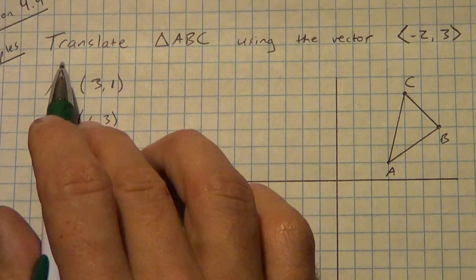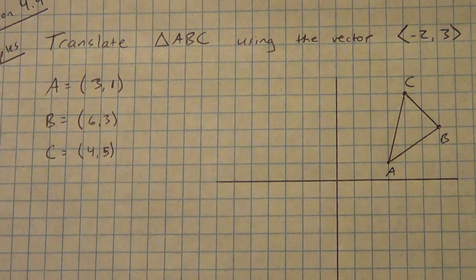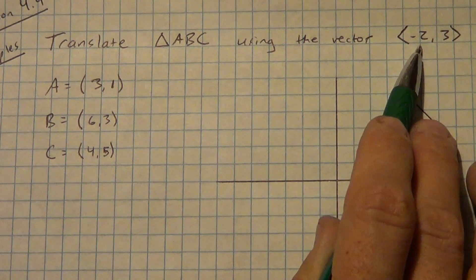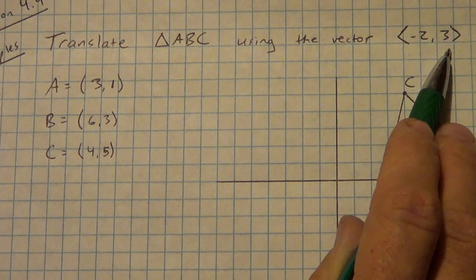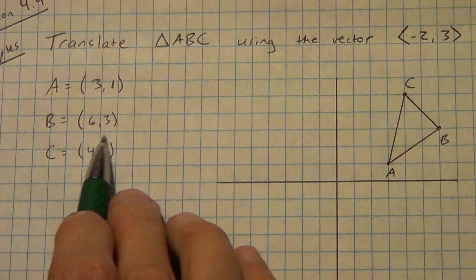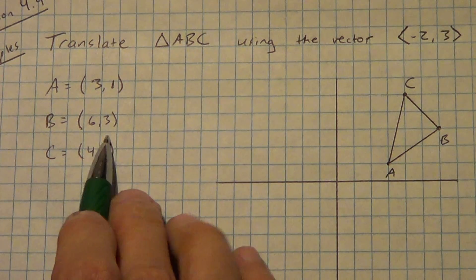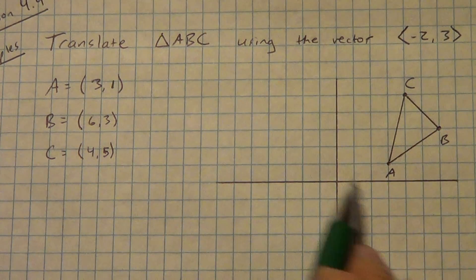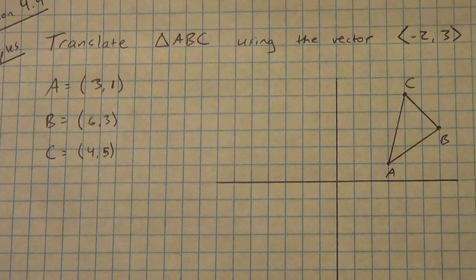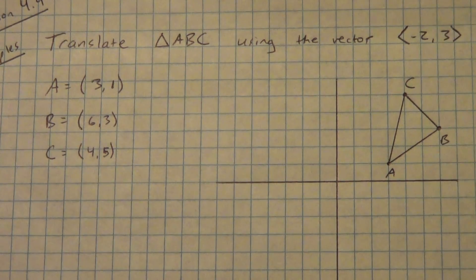Alright, we're going to do some examples. The first one is we're going to translate triangle ABC using the vector negative 2, 3. The original points are A at (3, 1), B at (6, 3), and C at (4, 5). I already have that graphed. Pause the video, get all that copied down, get that triangle graphed, and then come back when you're ready. If you don't pause it, you're going to be way behind.